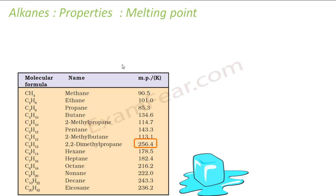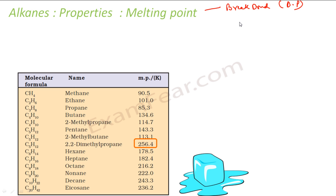Now let's talk about the melting point. There is a difference between melting point and boiling point. For boiling point, you have to break the intermolecular bonds completely to convert to vapor. But for melting point, it is just about deforming the crystal — you are not breaking the bonds completely. It is just crystal deformation, moving from solid to liquid stage.